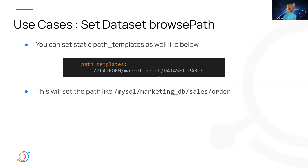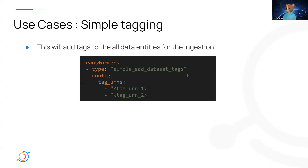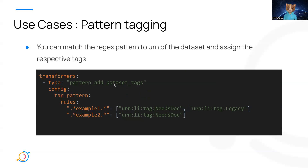The next transformer is tagging. There are multiple types of tagging datasets using transformers. The simplest one is called simple add dataset tags, which adds specified tags to all dataset entities for a certain ingestion run — you just list the tag URNs under config, with no complicated configuration needed. If you want to define a pattern in the tagging process, you can use pattern add dataset tags, where you match a regex pattern to the URN of the dataset and assign the respective tags.